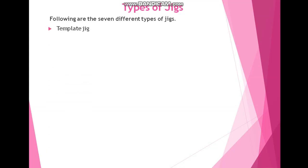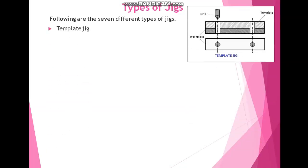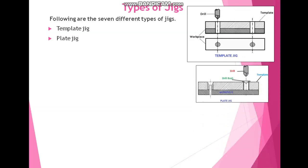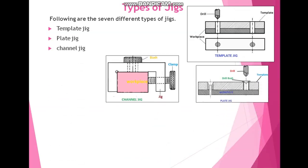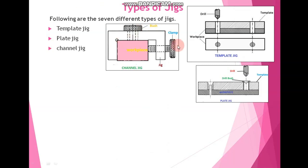Now we will see the types of jigs. Here we have a total of seven types of jigs. The first type of jig is the template jig — this diagram represents the template jig. The second type is the plate jig — this diagram represents the plate jig. The third type is the channel jig. This diagram represents the channel jig. This jig is called a channel jig because channel-type sections are used to locate the workpiece inside the channel.